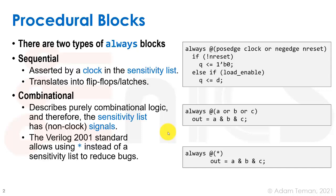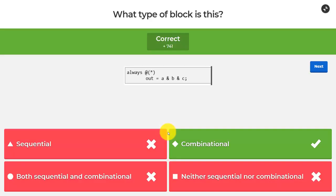So what we showed before is obviously a combinational block.